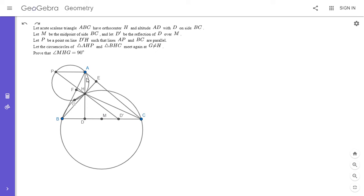What we do is draw the line D prime H and let it intersect the parallel through A to BC at point P. We let the circumcircles of AHP and BHC meet at point G, and we want to show that angle MHG is 90 degrees.